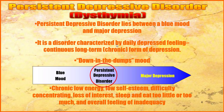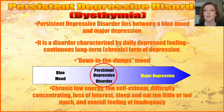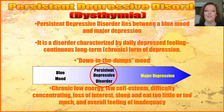Persistent depressive disorder used to be called dysthymia. This is a disorder that lies somewhere between just having the blues and major depression. It is characterized by daily depressed feeling — a continuous, long-term or chronic form of depression. Basically having a mood where you're down in the dumps all the time. You see chronic low energy, low self-esteem, difficulty concentrating, loss of interest, sleeping and eating either too little or too much, and an overall feeling of inadequacy.